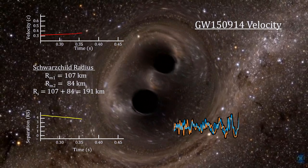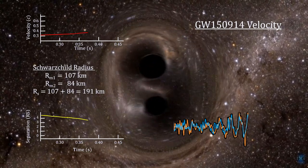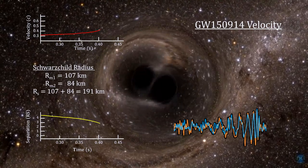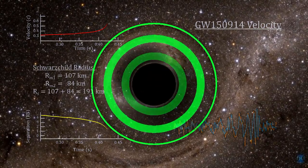Over the same period, the distance between the two black holes went from around 1,000 kilometers to just under 200 kilometers when their event horizons made contact.